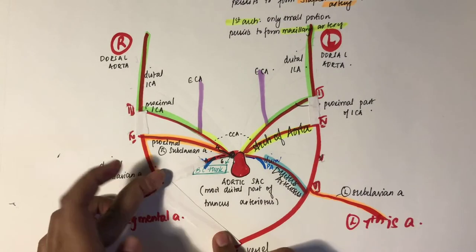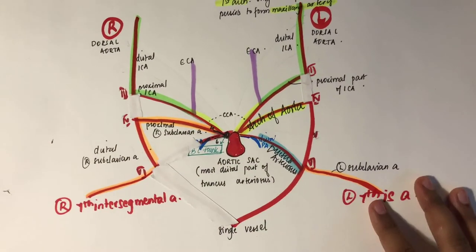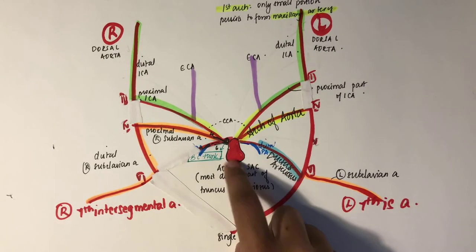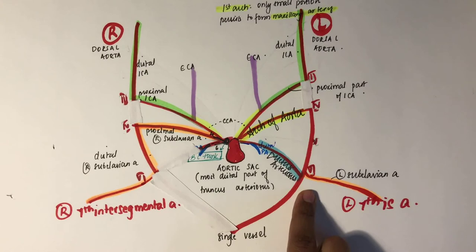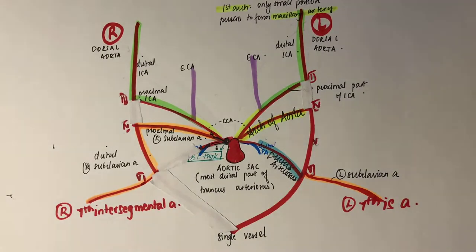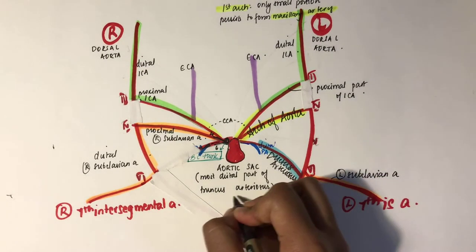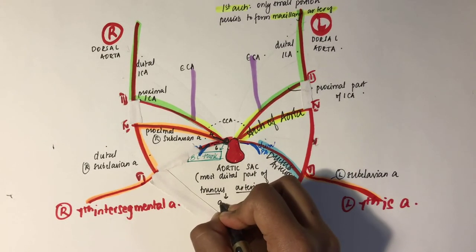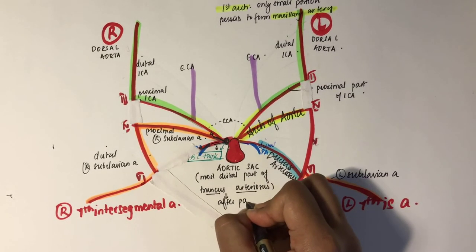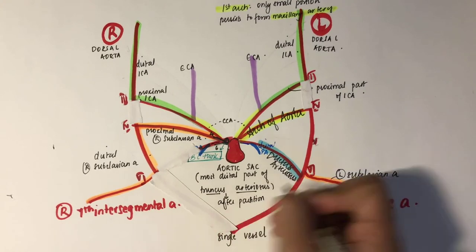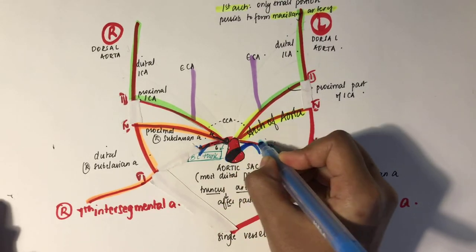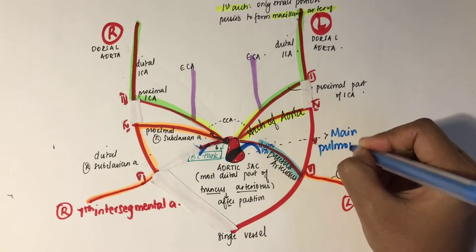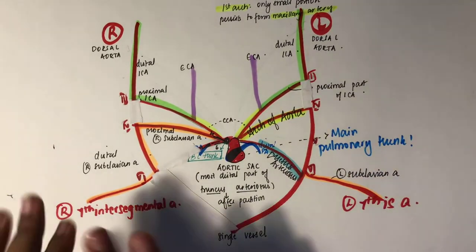After the partition of the truncus arteriosus — which is covered in another part of embryology — the main pulmonary artery develops from the pulmonary trunk.